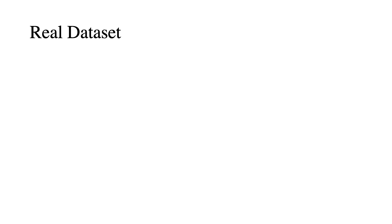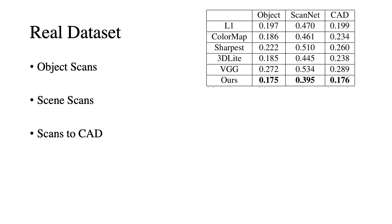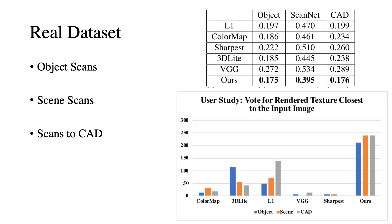For real data, we compare our method with state-of-the-art texture algorithms under self-collected object scans, ScanNet as scene-level scans, and propose an application to bake colors from images to roughly aligned CAD models. Quantitatively, our method achieves the best perception score, signaling that our rendered textures are closest to input views. We additionally perform a user study to verify that the quality of our texture is the best among competing methods. In the following are some visual results for comparison among different methods in the three settings discussed.